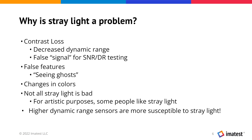Not all stray light is bad — for cinematography and artistic photography, some people like stray light, as seen in many Michael Bay films. But it's becoming more of an issue because of the applications cameras are being used in, such as automotive. Also, image sensors are becoming higher dynamic range, and higher dynamic range sensors are actually more susceptible to stray light — you'll be able to see a larger range of light, so you'll see more of the flare from an imperfect lens.